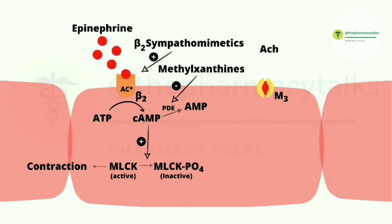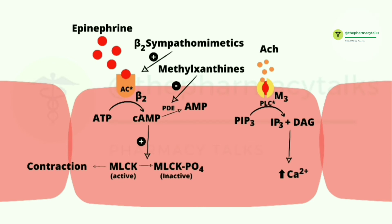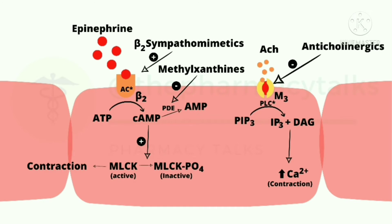The other important drug target is the muscarinic-3 receptor. In normal physiology, acetylcholine binds to this receptor and activates the phospholipase C system, converting phosphatidylinositol into inositol triphosphate and diacylglycerol. This increases intracellular calcium levels — inositol triphosphate releases calcium from the sarcoplasmic reticulum, and diacylglycerol increases calcium levels by opening L-type calcium channels. This increased intracellular calcium causes bronchoconstriction, worsening asthma. So anticholinergic drugs are given, which inhibit this muscarinic receptor. Examples are ipratropium bromide and tiotropium bromide.